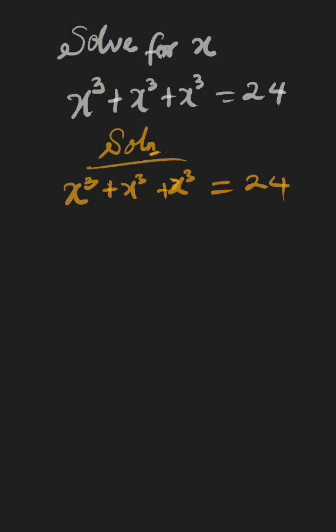Here we have x raised to power 3 at 3 places, so we can rewrite this to be 3 times x raised to the power of 3 equals 24.